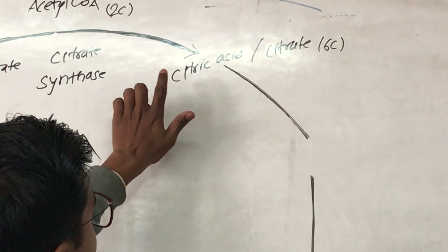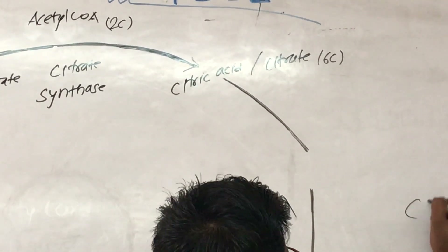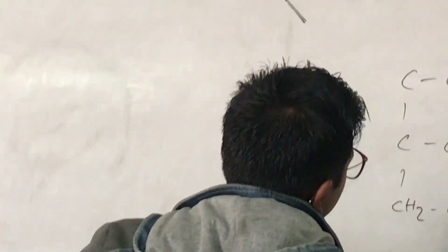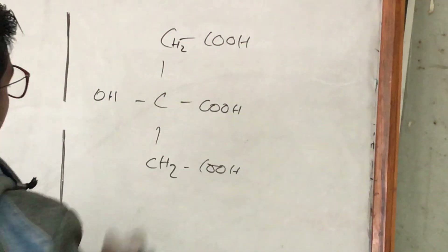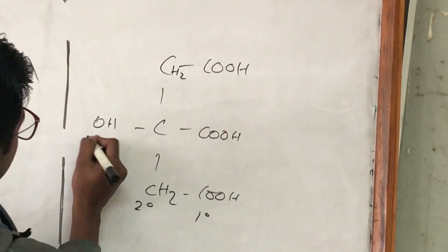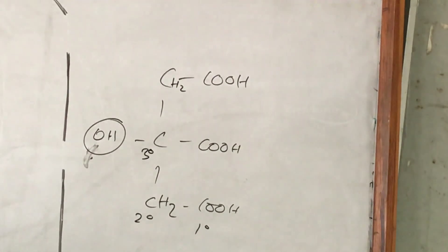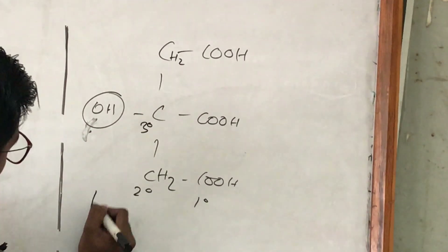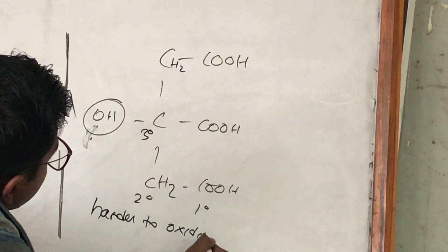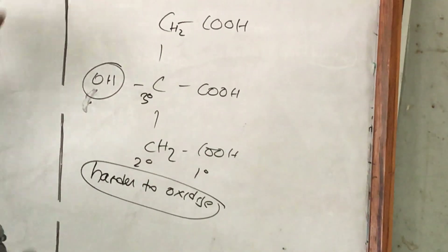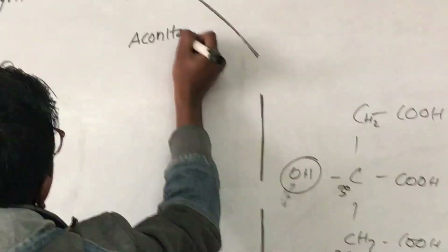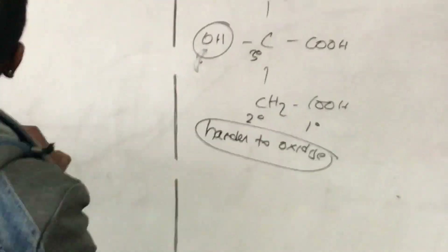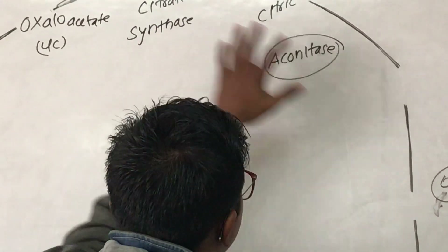Now, if we see the structure of citric acid, it is a 6-carbon compound. We can see there is a tertiary alcohol — a hydroxyl group is present at the tertiary carbon. The presence of this tertiary hydroxyl group in citric acid makes it harder to oxidize. If citrate reacts with aconitase, the CO2 released in the subsequent reaction would come from oxaloacetate, not from Acetyl CoA, so oxaloacetate cannot be regenerated and the Krebs Cycle would not occur.